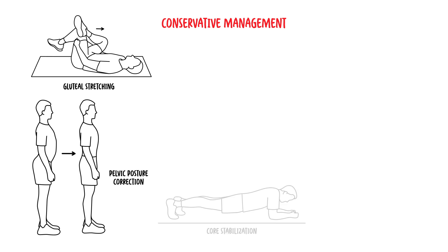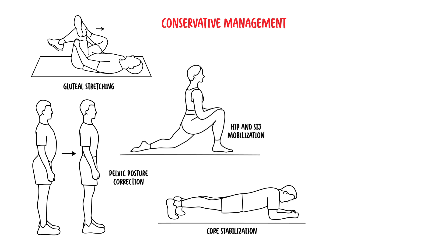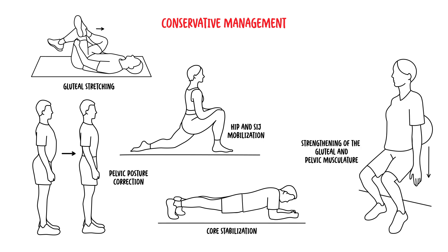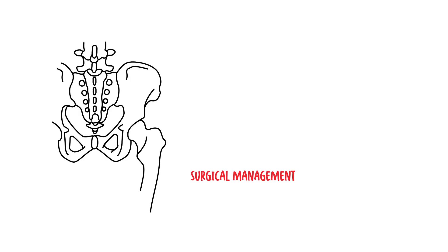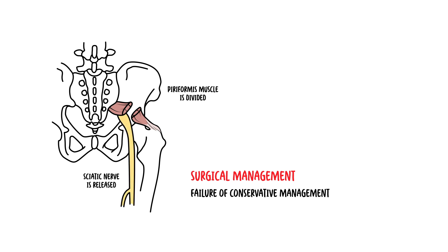Treatment includes conservative management: stretching the muscle, pelvic posture correction, core stabilization, hip and sacroiliac joint mobilization, and strengthening of the gluteal and pelvic musculature. Local anesthetic and steroid injection into the piriformis muscle can be useful if physiotherapy fails, and it's important not to inject directly onto the sciatic nerve. Surgical management is offered after failure of conservative management — the piriformis muscle is divided and the sciatic nerve can be released during surgery, with good results in the majority of cases.